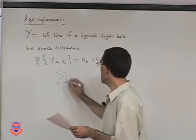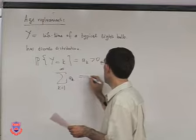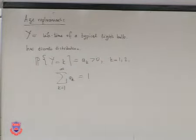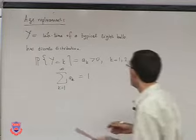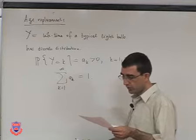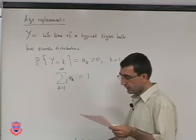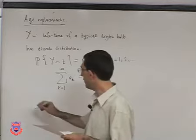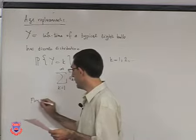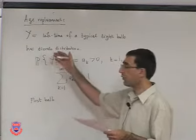Since this is supposed to be a probability distribution, we must ensure the sum of all a_k equals one. Here is how the replacement is done: each bulb is replaced by a new one when it burns out. Suppose the first bulb lasts until Y_1 — the first bulb has a lifetime of length Y_1, so it lasts until time Y_1.